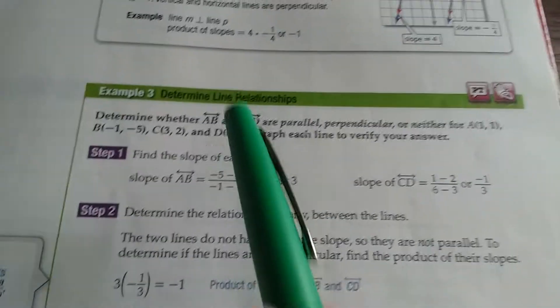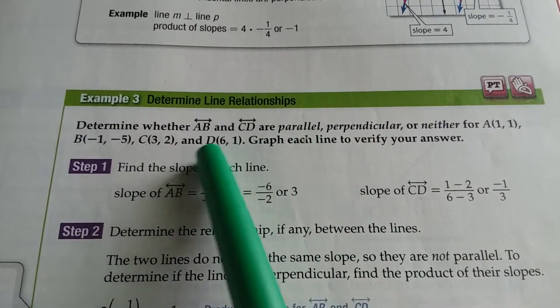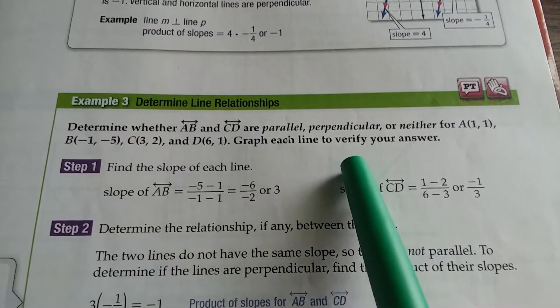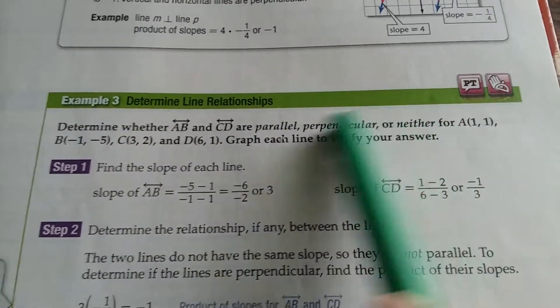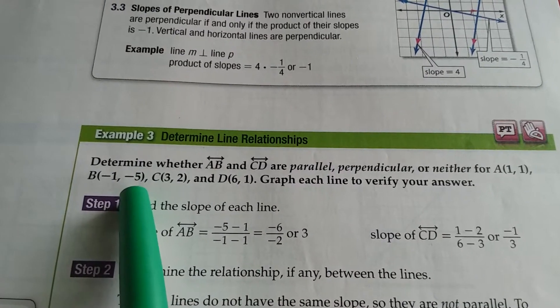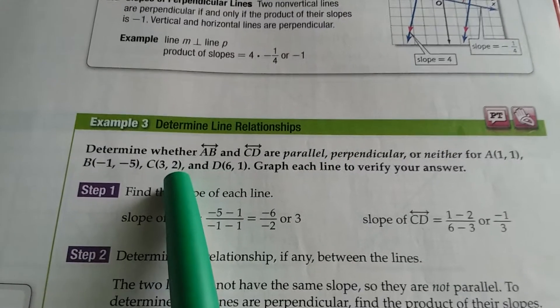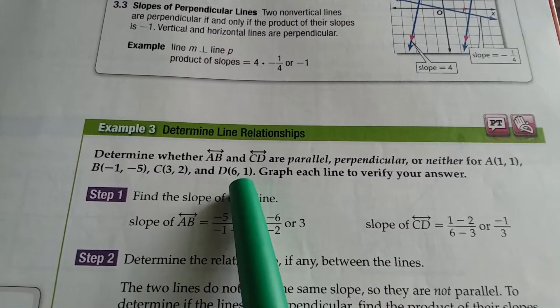So we're going to look at example 3 here, determine line relationships. So determine whether AB and CD are parallel, perpendicular, or neither for the following points. A at 1, 1, B at negative 1, negative 5, C at 3, 2, and D at 6, 1.